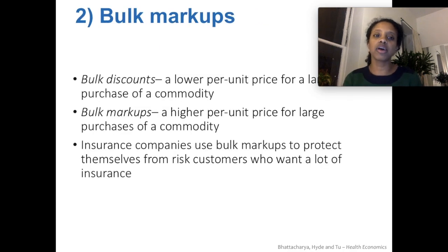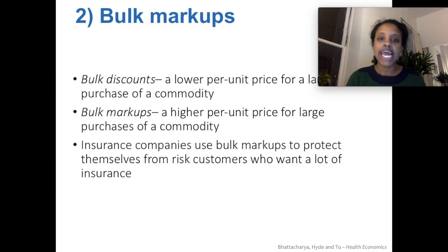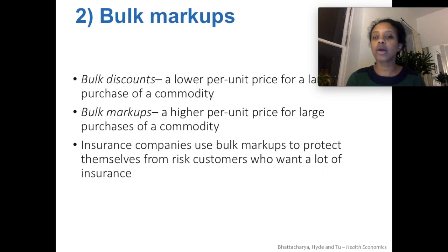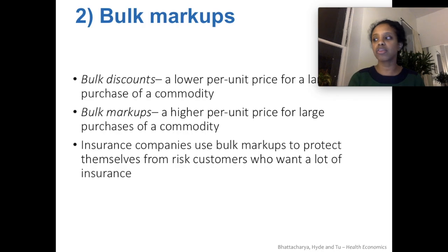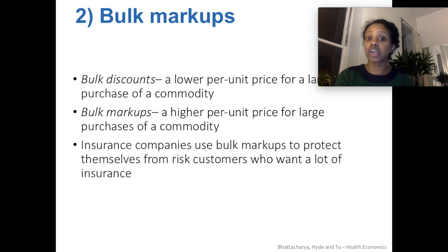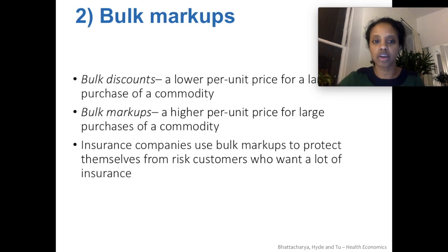Second would be a phenomenon of bulk markups. Bulk discounts are like when you go to Costco and it's a lower per unit price because you're buying in bulk. Bulk markups is exactly the opposite — a higher per unit price when you're making a large purchase — because insurance companies want to protect themselves against potential unknown risks when a person wants to buy a lot of coverage.